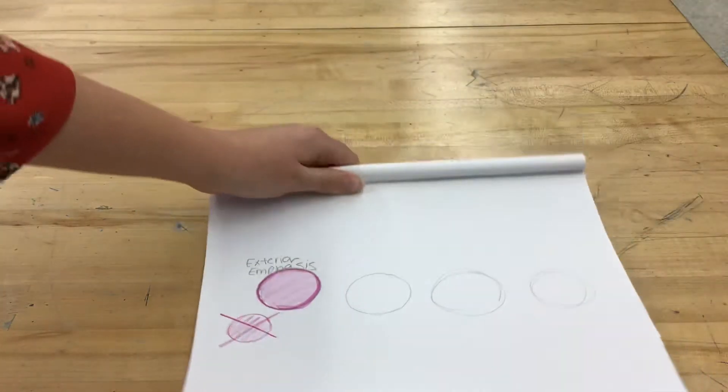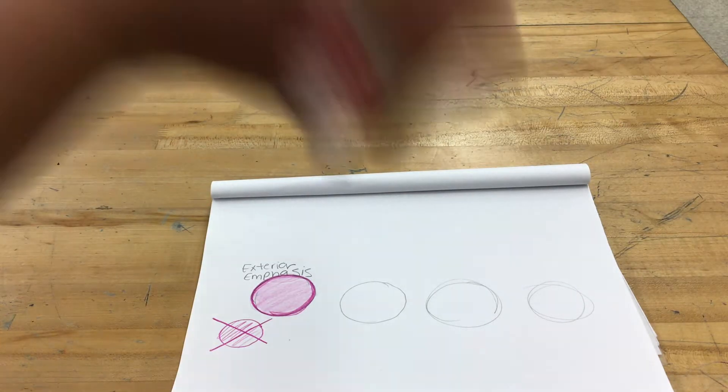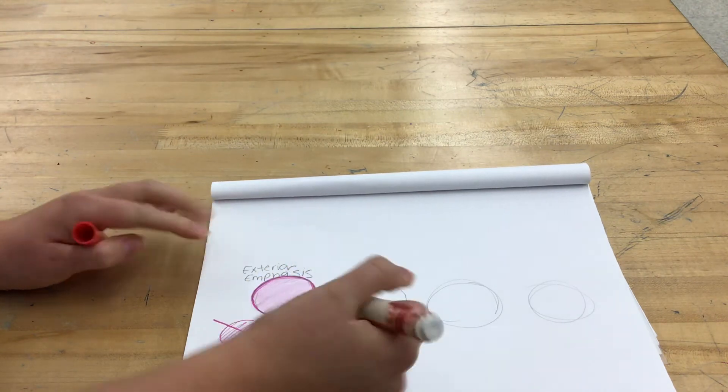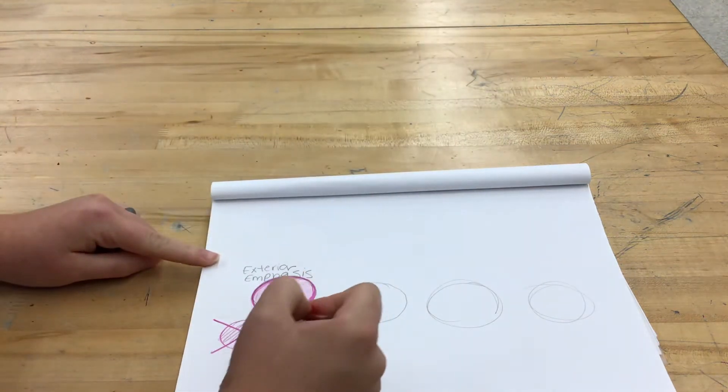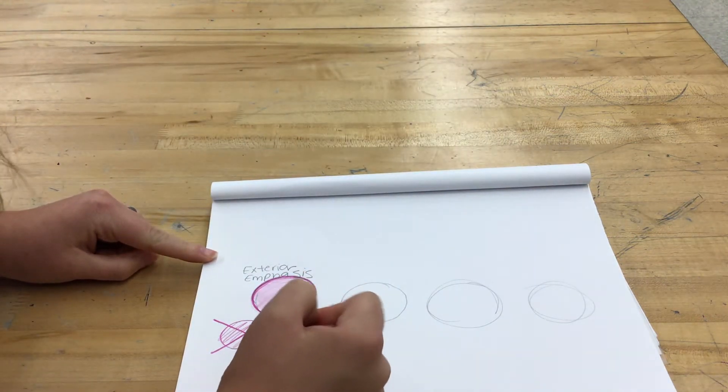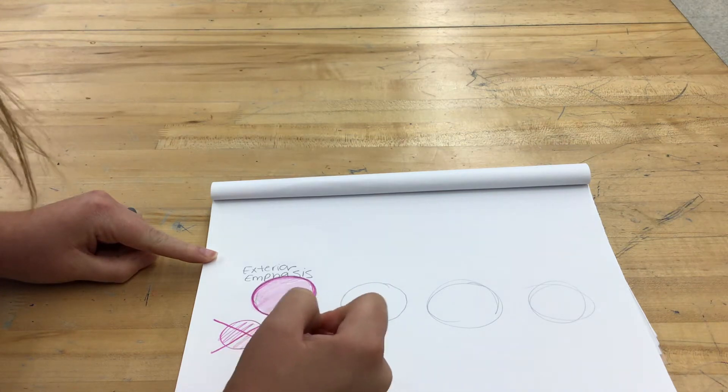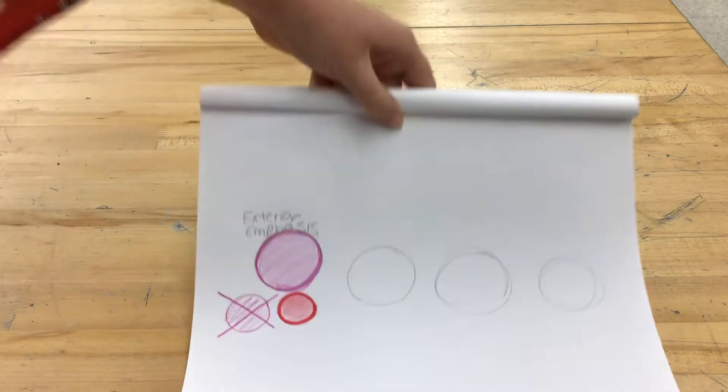Another way that we can do an exterior emphasis is by taking a marker and drawing that outline and then filling in that object with a corresponding colored pencil. I want to make sure that I am taking my time and I have clean lines.